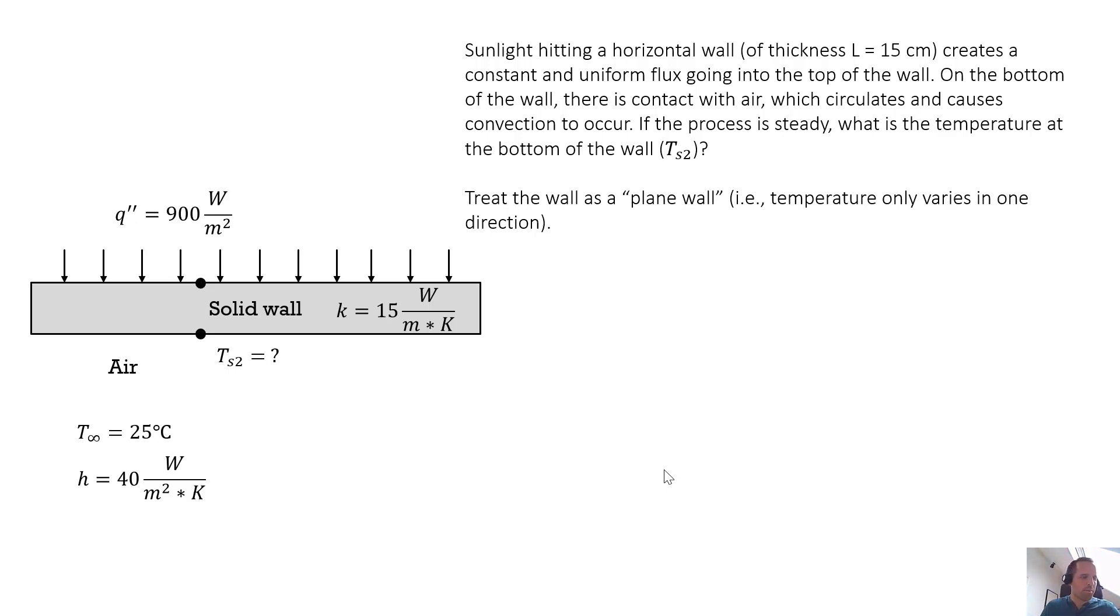All right, let's solve another example problem. This problem states sunlight hitting a horizontal wall or a roof or a ceiling creates a constant and uniform flux going into the top of the wall.